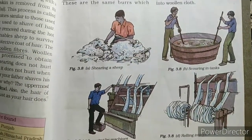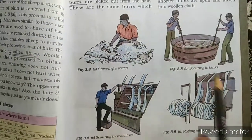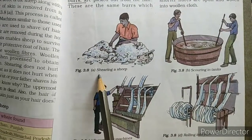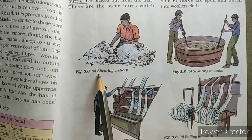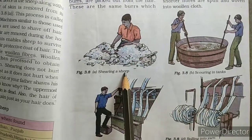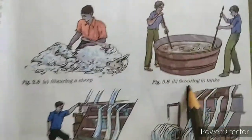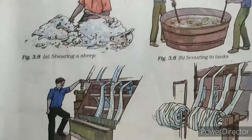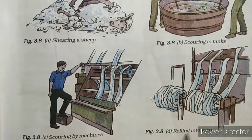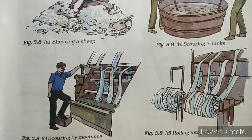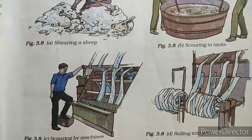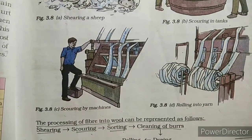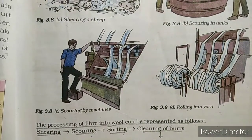In step six, the fibers are straightened, combed, and rolled into yarn. The longer fibers are made into wool for sweaters, and the shorter fibers are spun and woven into woolen cloth. The processing of fiber into wool can be represented as: shearing → scouring → sorting → cleaning of burrs → dyeing → rolling into yarn.